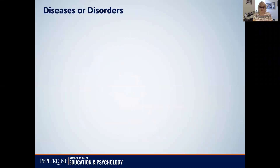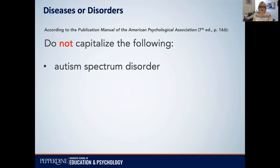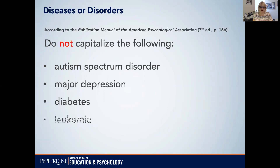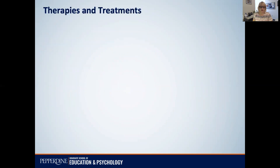So let's break this down a little bit. For diseases or disorders, here are some examples of what not to capitalize: autism spectrum disorder, major depression, diabetes, leukemia. You can see all of these — it seems like they maybe should be capitalized, but they are all lowercase.